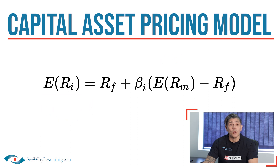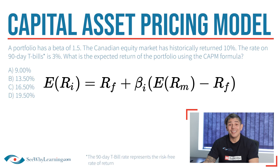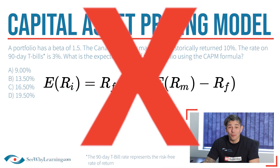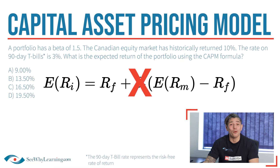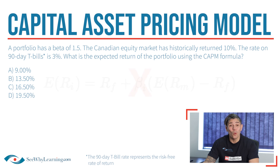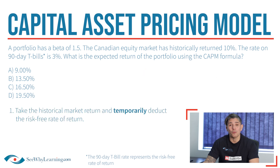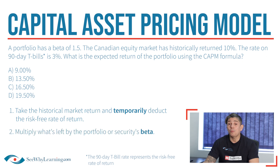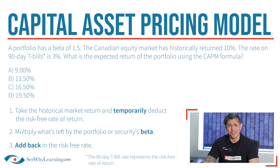Here's a sample question from the CY study tools and the formula you would use. Instead of using this scary-looking formula, all you have to do is remember three easy steps. One: take the historical market return and temporarily deduct the risk-free rate of return. Two: multiply what's left by the portfolio or security's beta. And three: add back in the risk-free rate. Pretty simple, right? Well, let's give it a try.